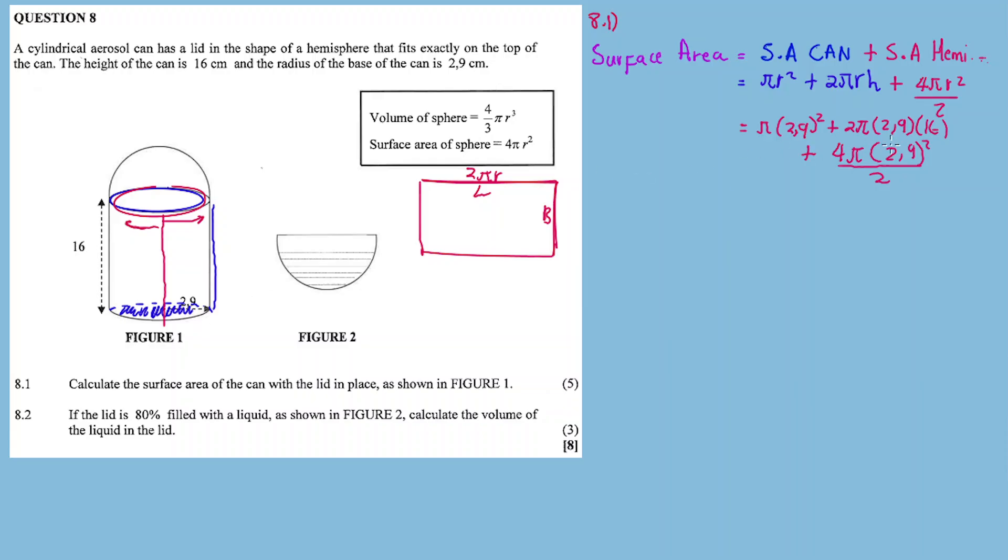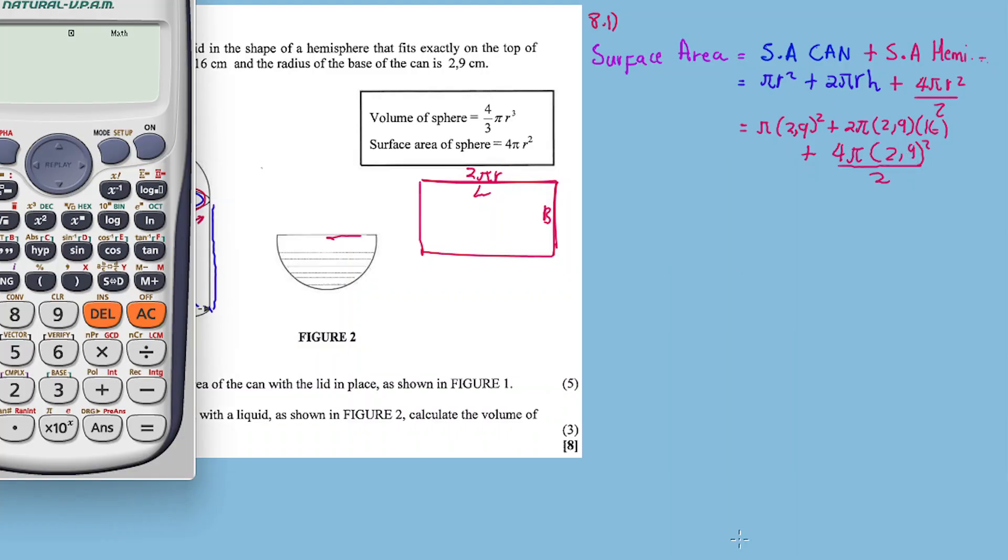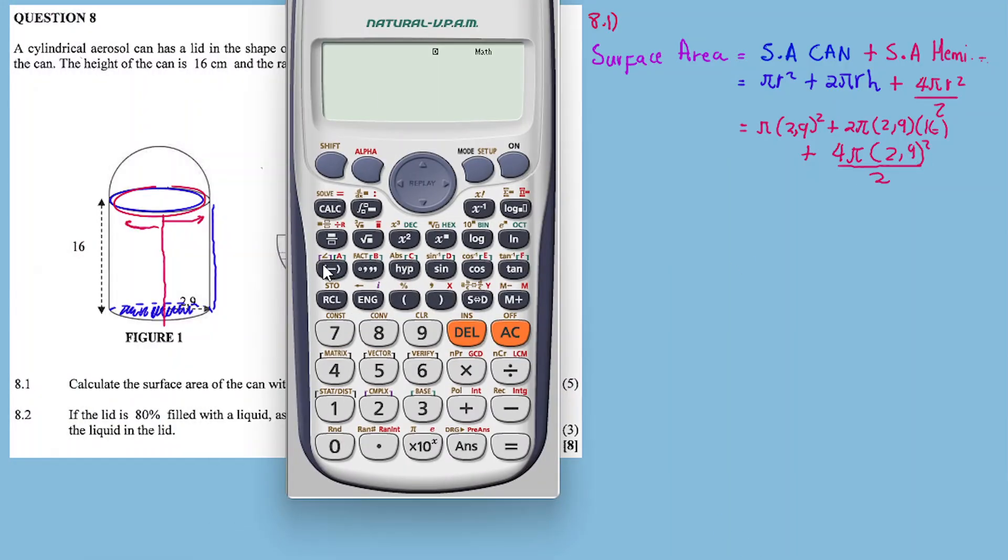Plus 4πr² over 2. The surface area of a hemisphere is basically the surface area of a sphere divided by 2. Substitute: π(2.9)² plus 2π(2.9)(16). The hemisphere has the same radius as the can - they share the same radius, that's why I used 2.9.